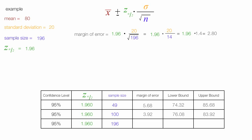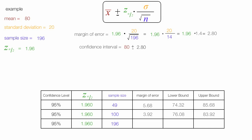Now I have the confidence interval, which is equal to 80, the mean, plus or minus the margin of error. So I have 80 plus or minus 2.8. The lower bound is 80 minus 2.8, which is 77.2. The upper bound is 80 plus 2.8, which is 82.80. The margin of error is 2.8, lower bound 77.20, upper bound 82.80.